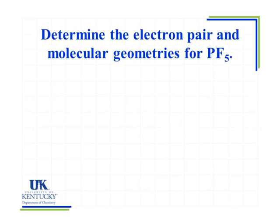So determine the electron pair and molecular geometries for PF5. Anytime I want to determine the geometries of a molecule, I first need to get the Lewis structure of that molecule.